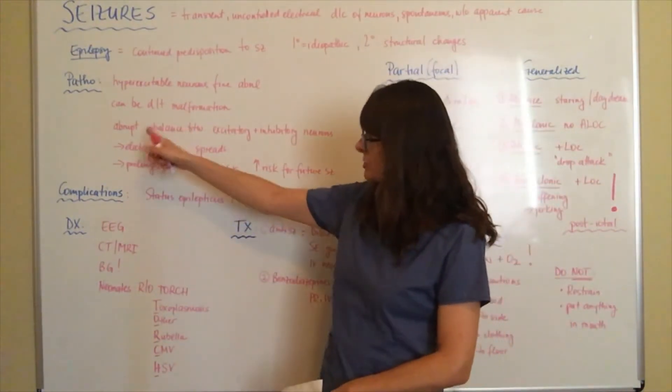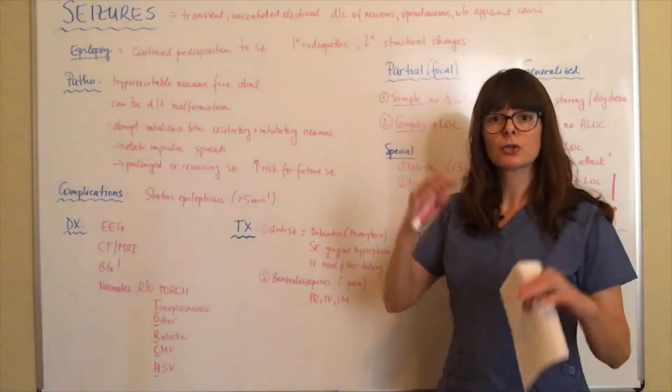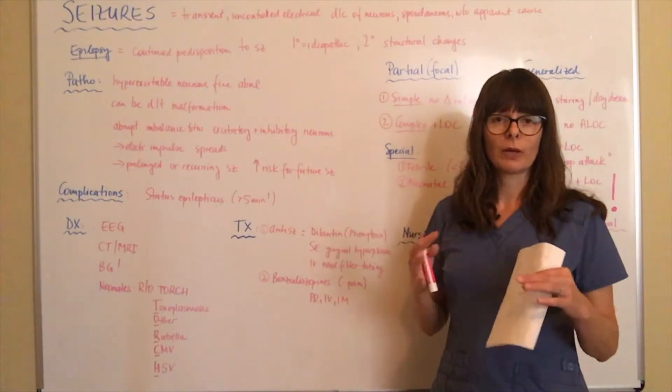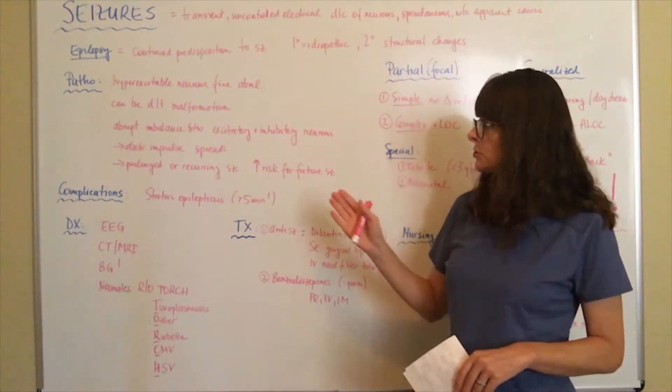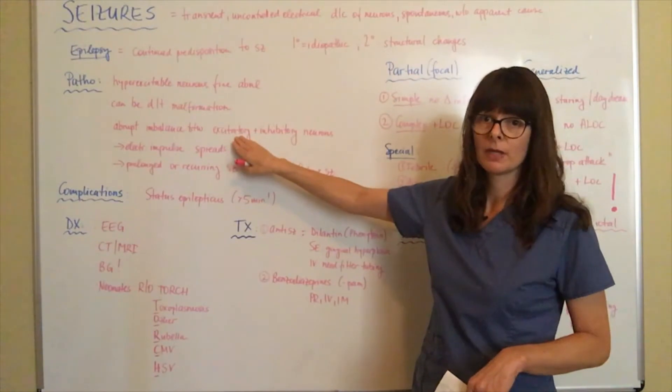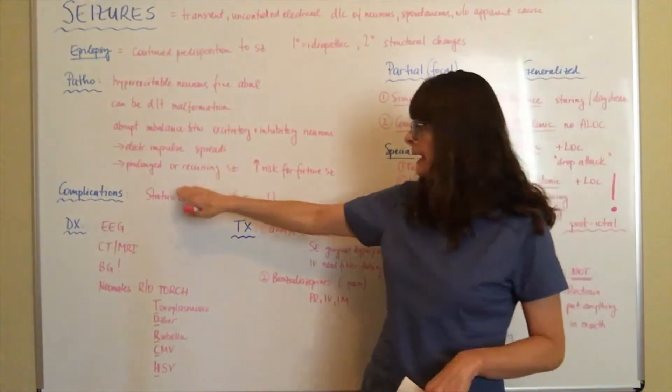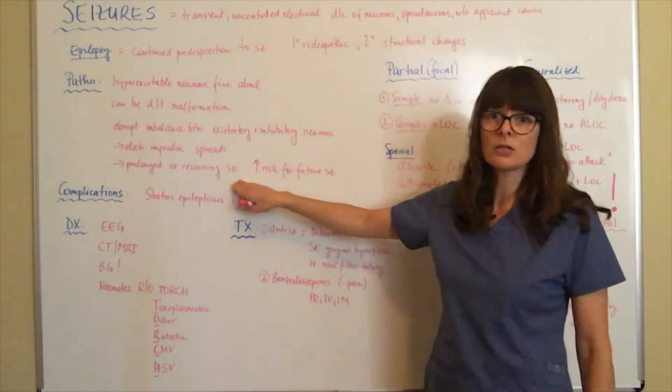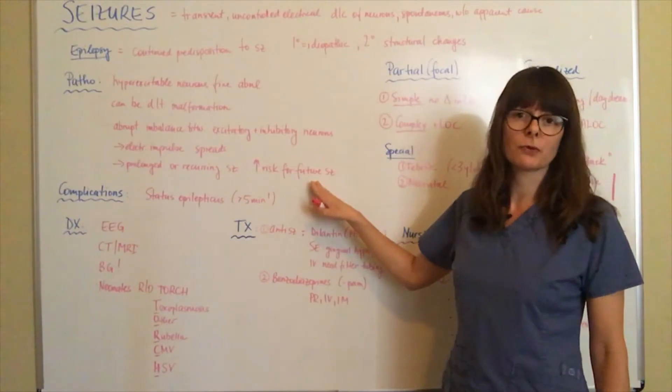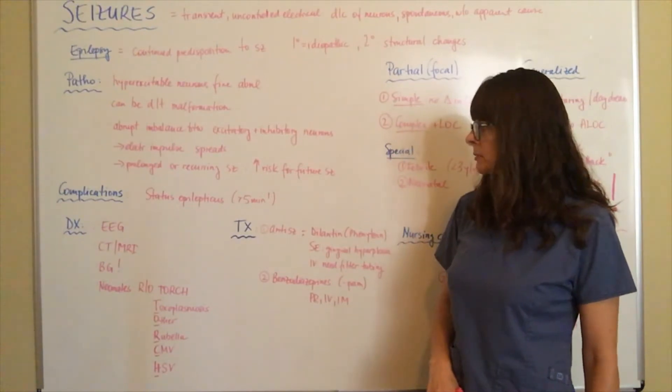Seizures are an abrupt imbalance between excitatory and inhibitory neurons. Keep in mind that usually we have this nice balance of excitation and inhibition with the way that the neurotransmitters function. But in seizures we have this imbalance and the excitatory neurons win, which causes the electrical impulse to spread to other areas of the brain. If the patient has prolonged or recurring seizures that happen in continuously different episodes, there is an increased risk for future seizures.